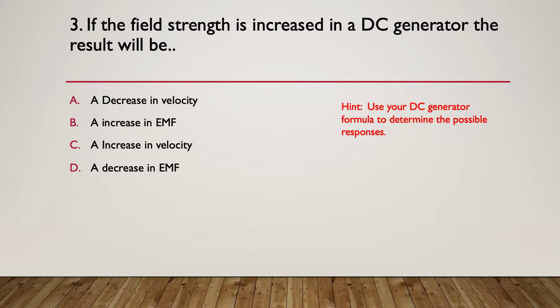So here's the hint. Use your DC generator formula to determine the possible responses. So field strength is increased, our EMF will also go up. If you look at the formula, the EMF is directly proportional. Therefore an increase in field strength means an increase in EMF at the terminals.